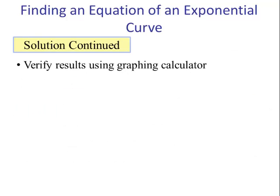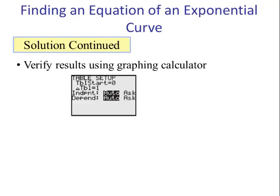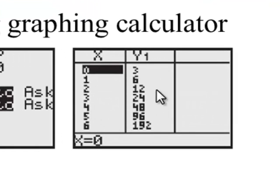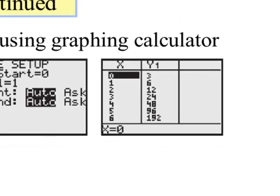We can verify by using the graph and calculator. We put the equation in y1. Using the table set, we make sure the independent and dependent are on auto. The resulting table matches the values from the problem, so we have verified that this is the correct equation.